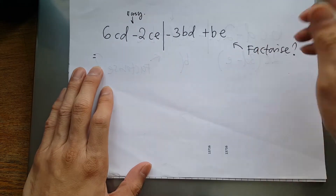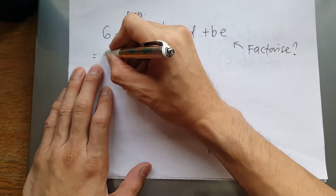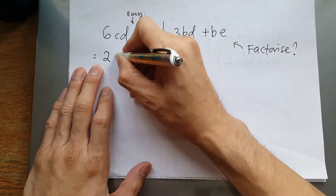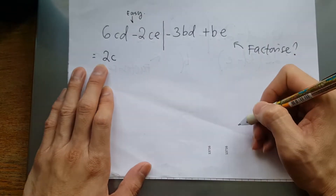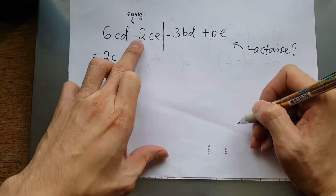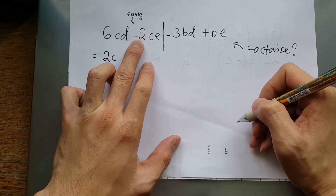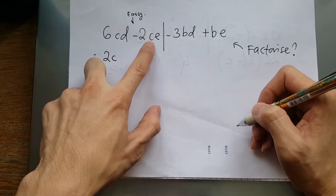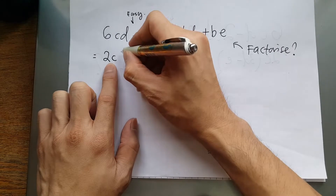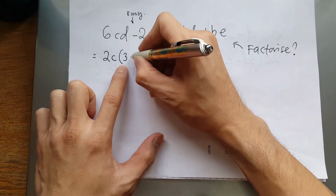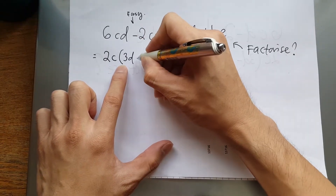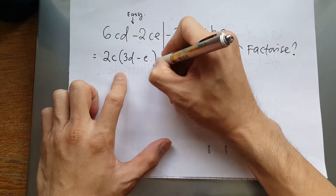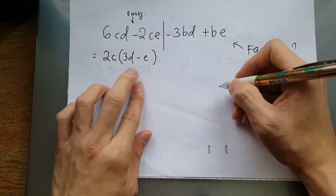Yes, you can do that. So I take the 2 out, then I take the c out — because 6 and 2 can both be divided by 2, so I take that out. Then c repeats, so I take it out. What I'm left with inside is 3d minus e.